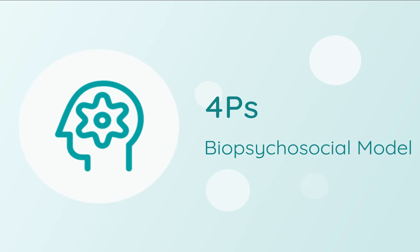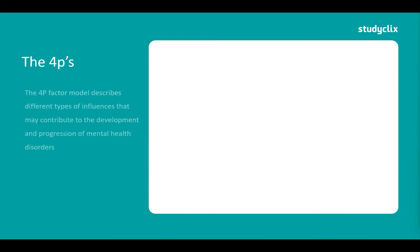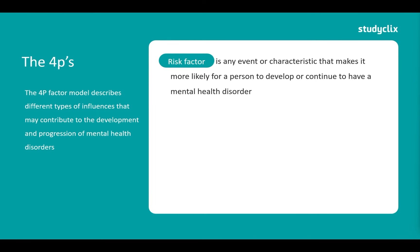We're going to start off with the four P's. The four P model describes different types of influences that may contribute to the development and progression of mental health disorders. These are made up of what we call risk factors — any event or characteristic that makes it more likely for a person to develop or continue to have a mental health disorder.